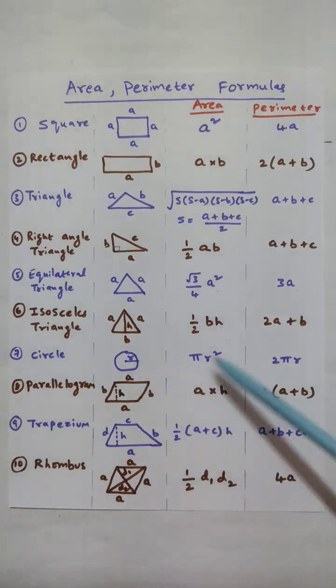Circle of radius R. Area is pi R squared. Perimeter is 2 pi R.